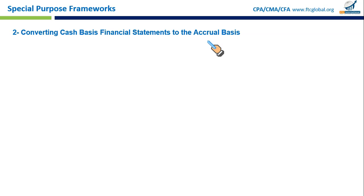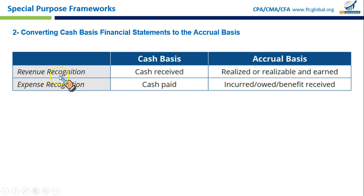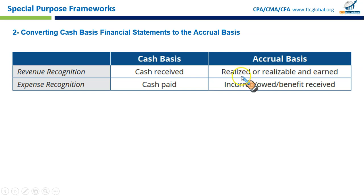The key differences between cash basis and accrual basis accounting are shown in a table. Revenue recognition in cash basis occurs only when cash is actually received. For example, a contractor who finishes a project in December but gets paid in January recognizes revenue in January. In accrual basis, revenue is recognized when services are performed or goods are delivered, even if payment hasn't yet been received.